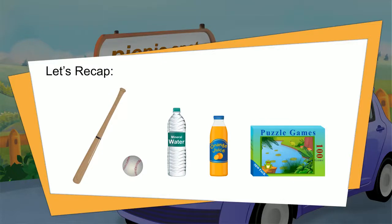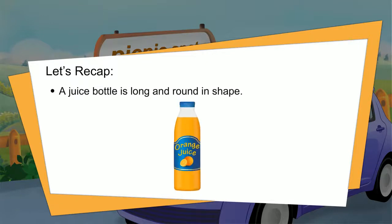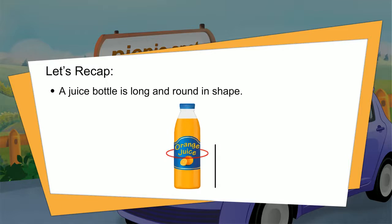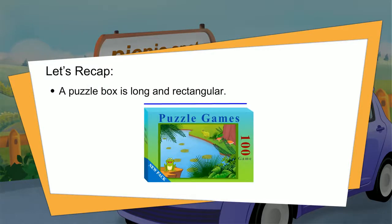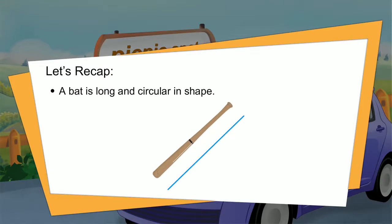Let's recap. We have seen different objects and learned about their features. For example, a juice bottle is long and round in shape, a baseball is small and round, a puzzle box is long and rectangular, and a bat is long and circular in shape. Similarly, we can describe other objects on the basis of their observable features.